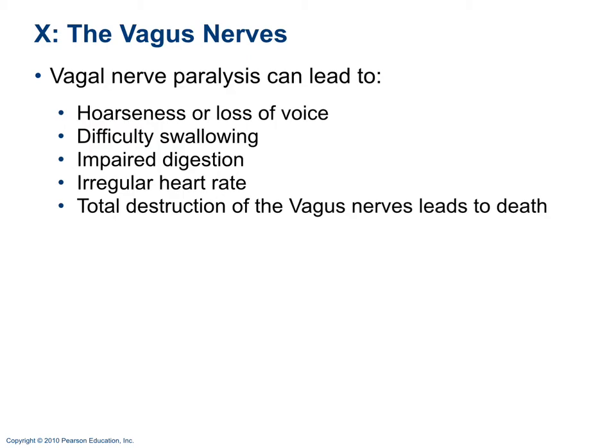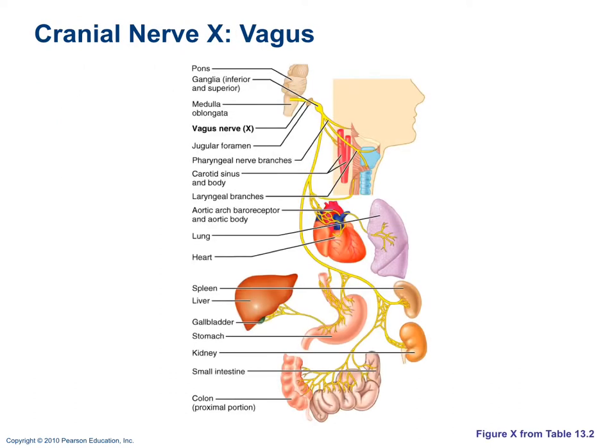Vagus nerve paralysis leads to hoarseness and loss of voice, difficulty swallowing, impaired digestion, irregular heart rate, and difficulty breathing. Total destruction of the vagus nerve would lead to death. The picture shows the many organs the vagus nerve interacts with.